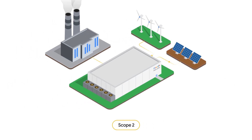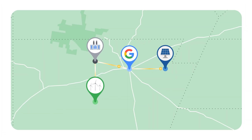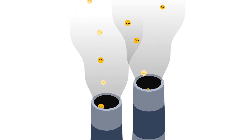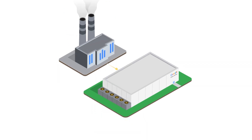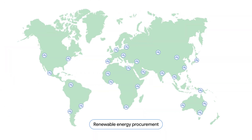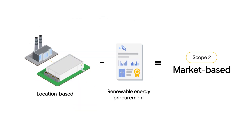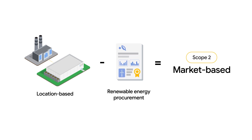In scope two, there are two methods for calculating emissions. Our carbon footprint products start with location-based. Location-based emissions represent the emissions released by the sources powering the electric grid where consumption occurs, and reflect the actual emissions released to the atmosphere as a result of our data centers' electricity consumption. Market-based emissions, on the other hand, represent the combination of emissions associated with the grid electricity consumed by a company, as well as any renewable energy certificates a company purchases. In other words, market-based reflects the emissions that a company is responsible for after its clean energy purchasing activities.